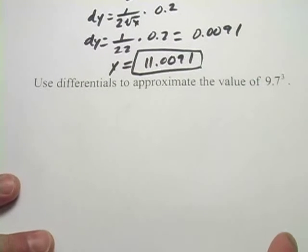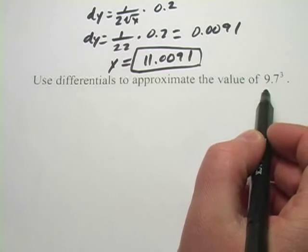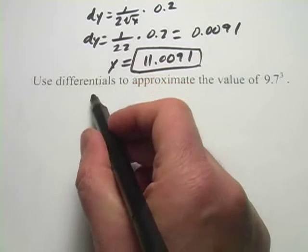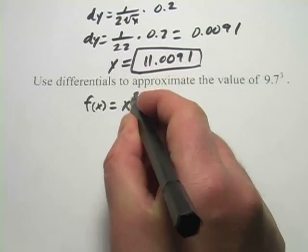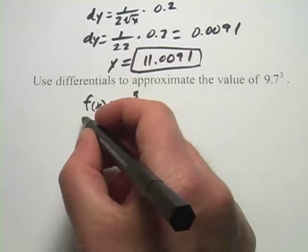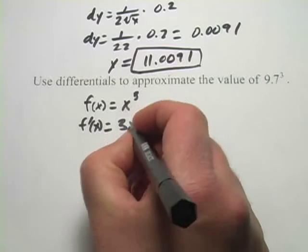Now, this one says use differentials to approximate the value of 9.7 cubed. So instead of taking a square root, we're cubing something. So our function here is going to be just x cubed. And let's go ahead and take the derivative of that function, because we're going to need it, and that would just be 3x squared.